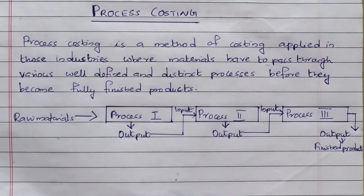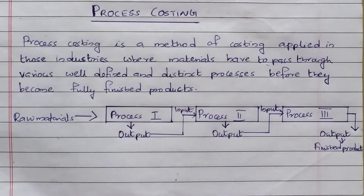Process costing is suitable for chemical industries and food processing industries. In this method, raw materials pass through one process and become finished products. That is why it is called process costing.